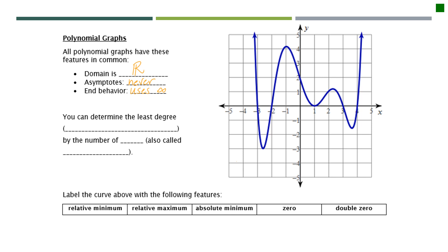What we're going to be talking about a lot in this unit is the degree of a polynomial. You can determine the least degree of a polynomial, which is the smallest possible exponent, by the number of zeros that it has. Zeros is another word for roots or solutions of the polynomial. You can see them on the graph by looking at where it crosses through the x-axis.